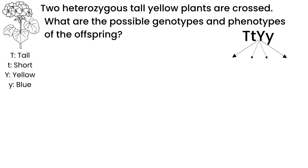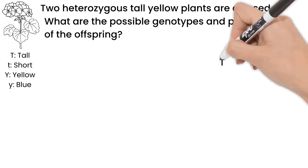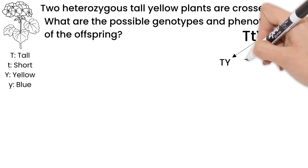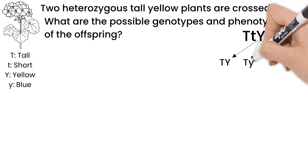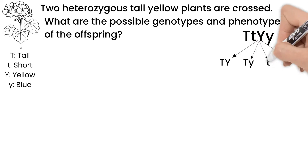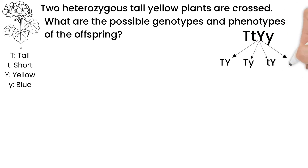The four possible gametes are: capital T capital Y, capital T lowercase y, lowercase t capital Y, or lowercase t lowercase y.